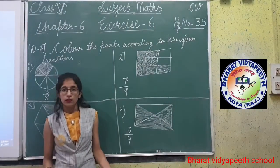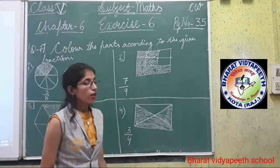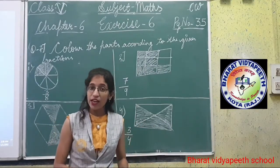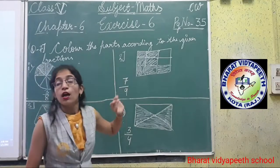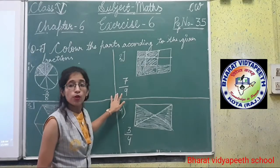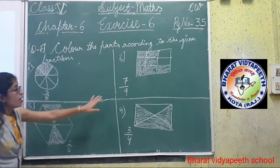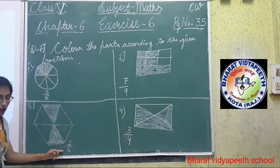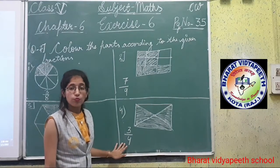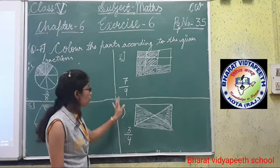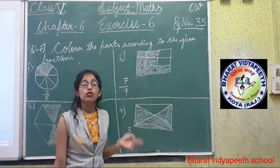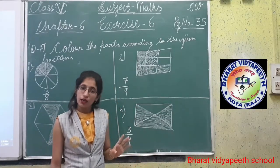Is it clear to you all? Children, listen carefully. You have to use a pencil to shade. In your group copy, question number 7 — the numbers may not be given. If the numbers are not given, you have to write down these numbers: 3 by 8, 7 by 9, 2 by 6, 3 by 4. Clear to you all? Then do the shading with a pencil.